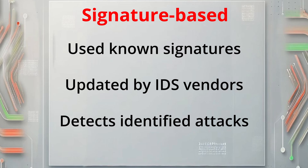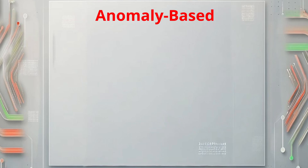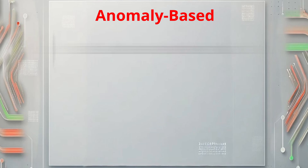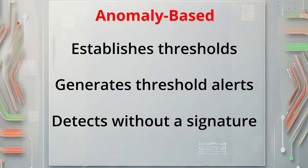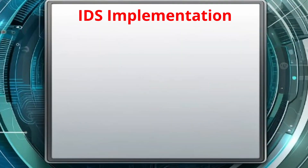The second detection method is anomaly-based detection, which is also known as behavioral or heuristic detection. Anomaly-based detection defines a baseline of normal network traffic and then monitors it, looking for anything that falls outside that baseline. Thresholds are used to identify any deviations from that baseline, and when the threshold is reached, an alert is generated. Anomaly-based systems can respond to some unknown attacks even if they don't have a corresponding signature file.